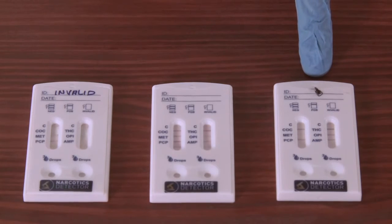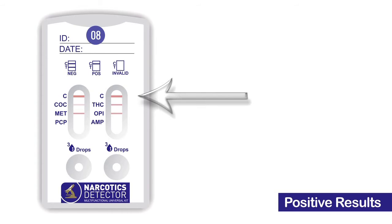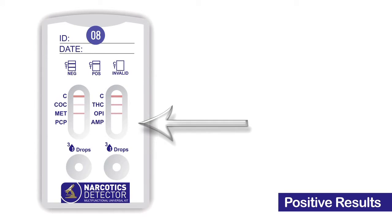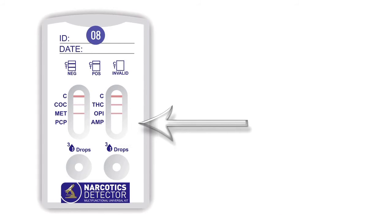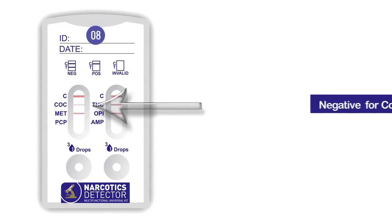This is an example of a positive test. There will be a control line appearing in the control area but no line appearing at PCP and amphetamines, making it a positive test for PCP and amphetamine. You will however see a ghost line at cocaine, making cocaine a negative test.